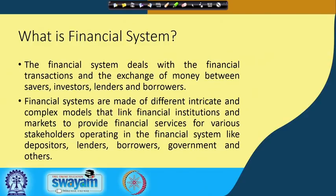If you see each word and what it defines: savers means the household sector or the corporate sector. Mostly the household sectors are the savers who want to save their money for specific reasons. The investors are those people who want to use those particular savings to generate certain profits — mostly the corporate sectors are responsible for that. The lenders are basically the financial institutions or banks which lend money for specific reasons, such as buying a house, investing money in the market, or buying other consumable products.